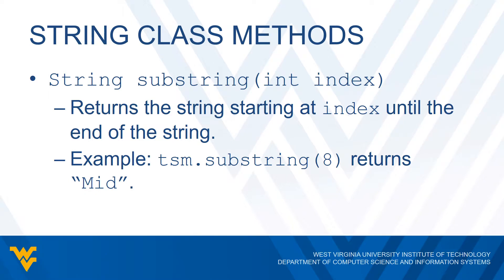For example, if I put in TSM.substring and then pass the number 8, that's just going to return 'mid' — because remember, we had 'team solo mid'. So we go all the way up to position 8, which is capital M, and then we get the remainder of the string all the way to the end and return that portion.